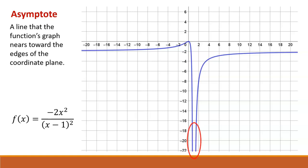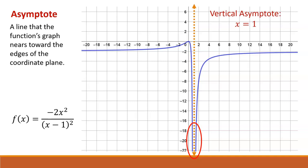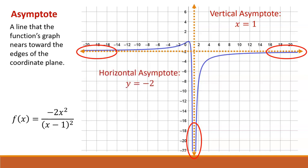If we look at the bottom edge, we might notice there's a vertical line that the function seems to be getting close to. That vertical line is x equals 1, and it's a vertical asymptote for the function. If we look at the left and right edges of the graph, we can see a horizontal line that the function seems to be getting close to. That line is y equals negative 2, and it's a horizontal asymptote for the function.